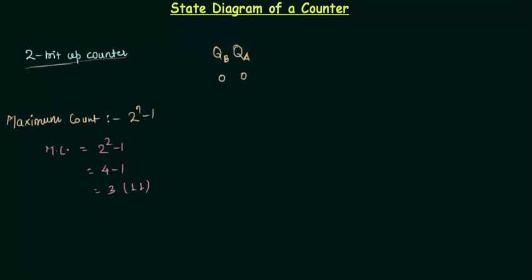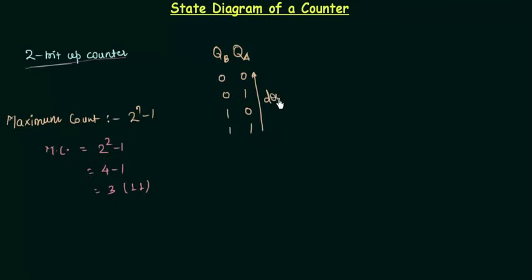So my counter will count from 0 0 to 0 1, then 1 0, and finally 1 1. If it is a down counter it will count from 1 1 and end at 0 0. As it is an up counter it will count from 0 0 and end at 1 1.